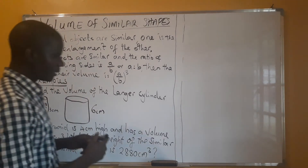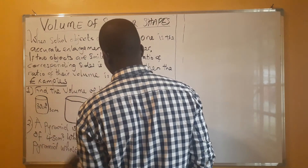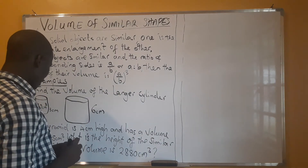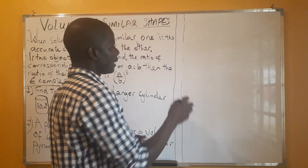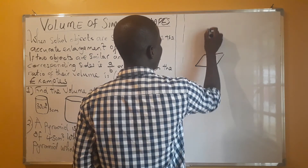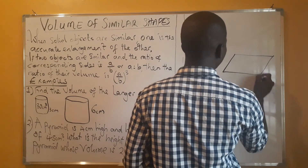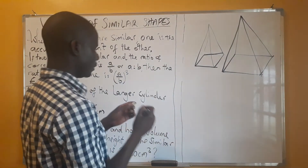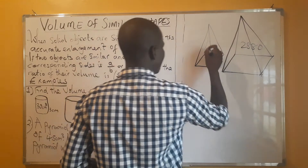We are given two similar pyramids. For one pyramid, the height is given; for the other, the height is not given. We have two pyramids here — this one has a volume of 2880 and this one has a volume of 45.